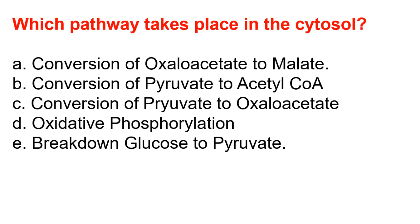Which pathway takes place in the cytosol? A, conversion of oxaloacetate to malate. B, conversion of pyruvate to acetyl-coenzyme A. C, conversion of pyruvate to oxaloacetate. D, oxidative phosphorylation. E, breakdown of glucose to pyruvate. The answer is A, conversion of oxaloacetate to malate.